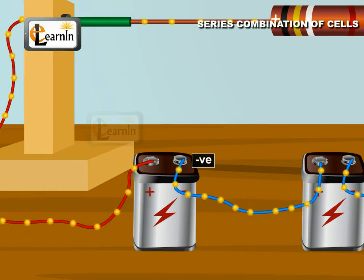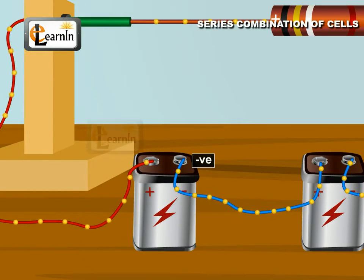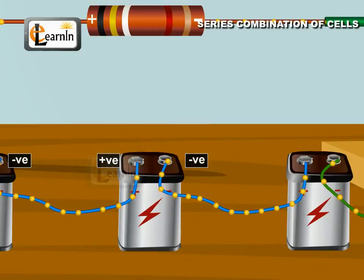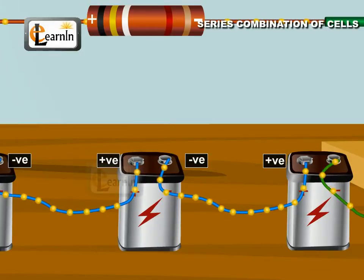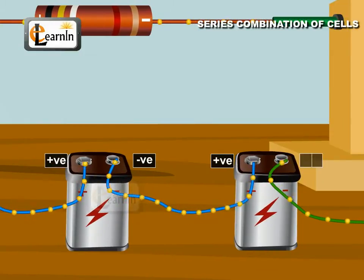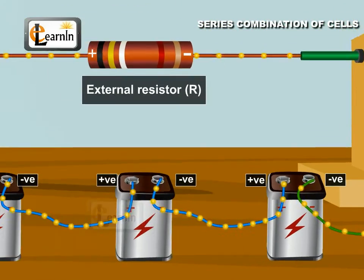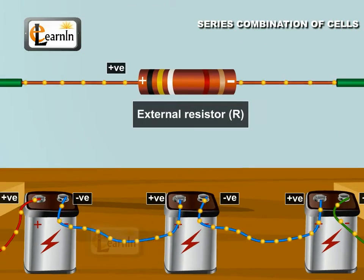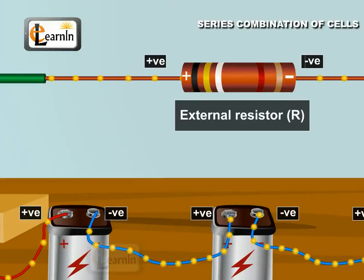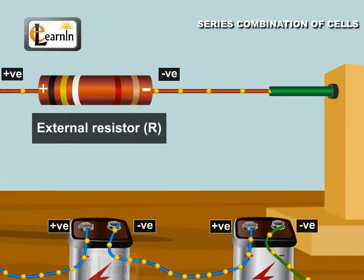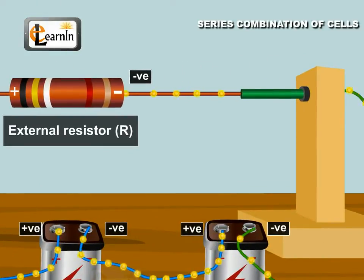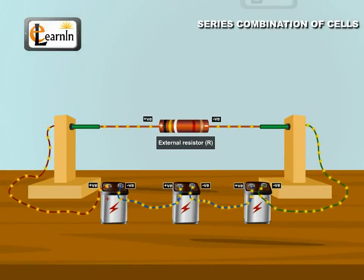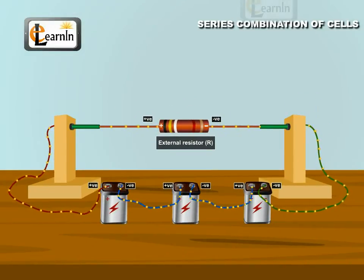The negative terminal of the first cell is connected to the positive terminal of the second cell. The negative terminal of the second cell is connected to the positive terminal of the third cell, and so on. Finally, the external resistance R is connected in series between the positive terminal of the first cell and the negative terminal of the last cell. Such a combination of cells is called a series combination of cells.